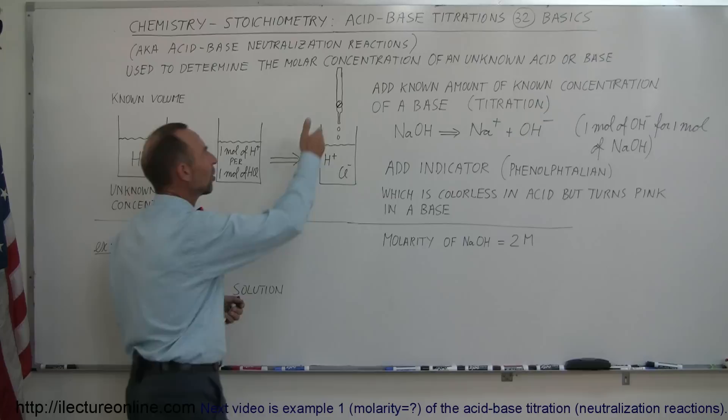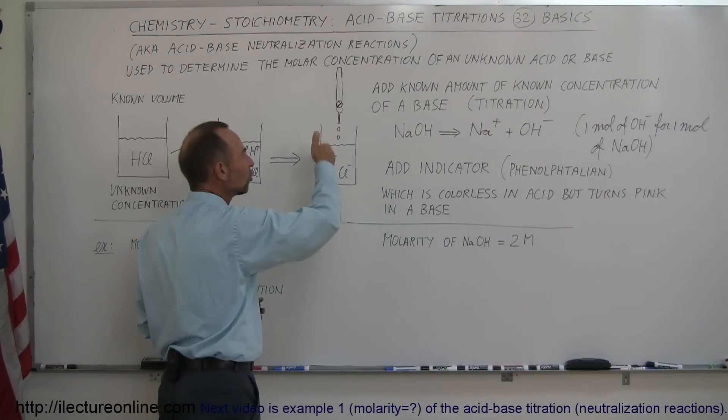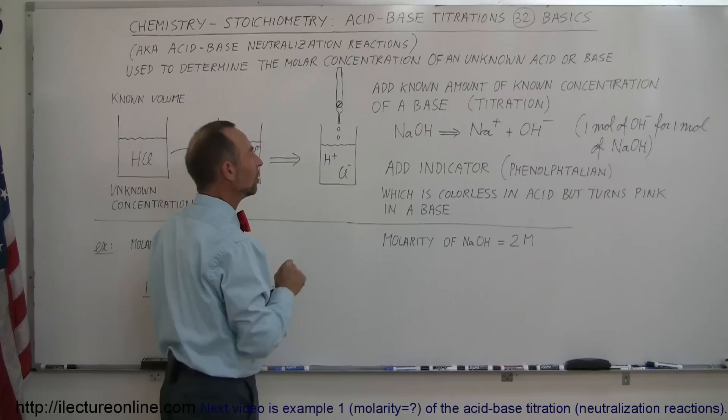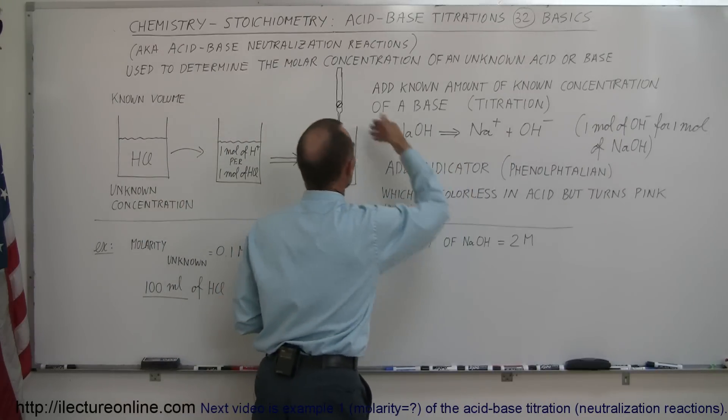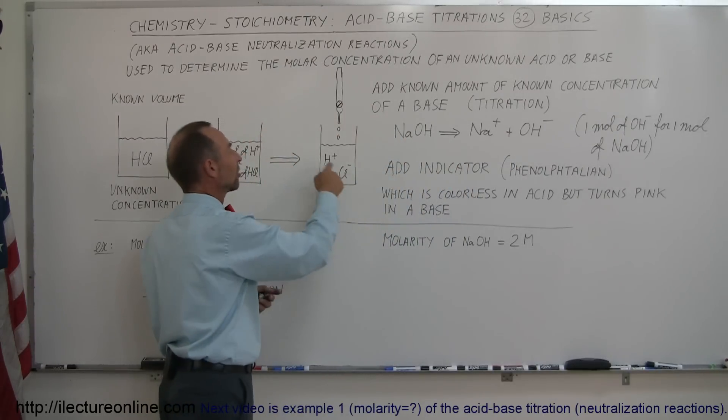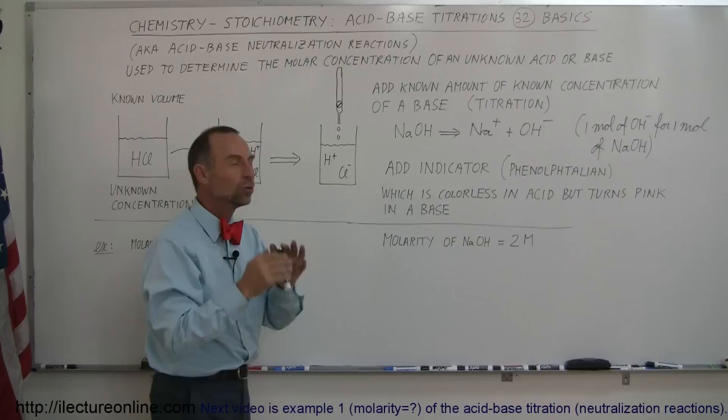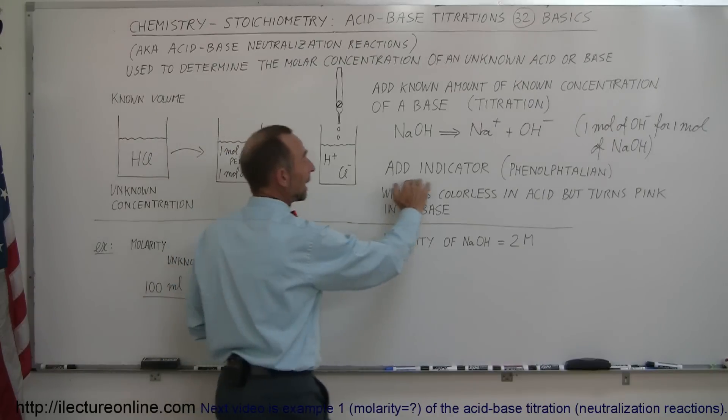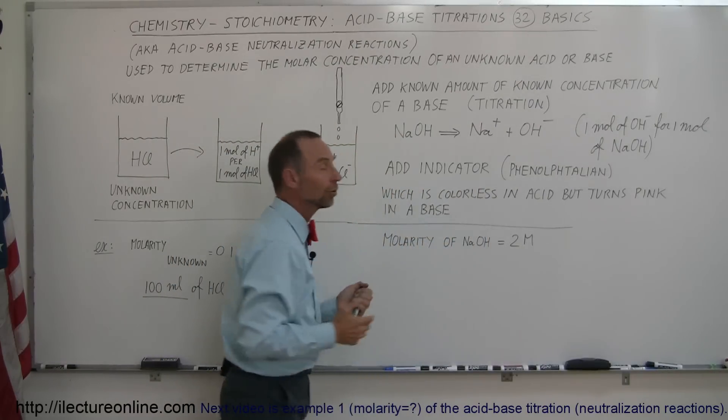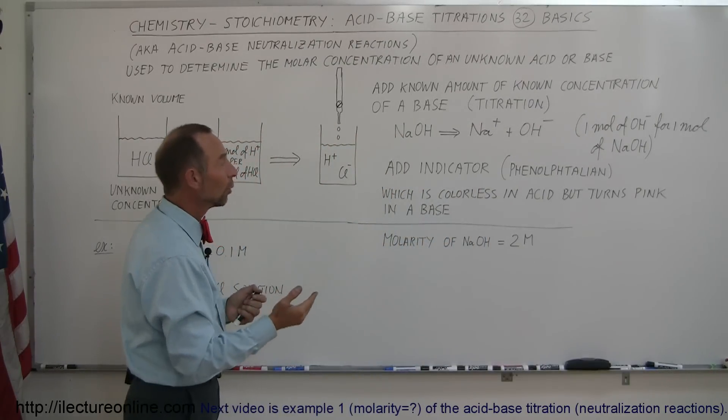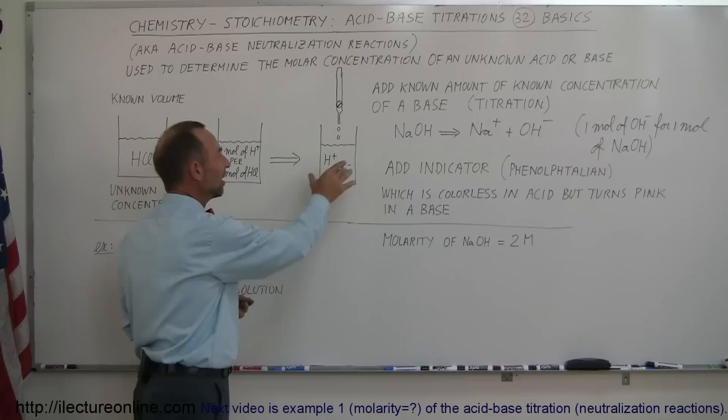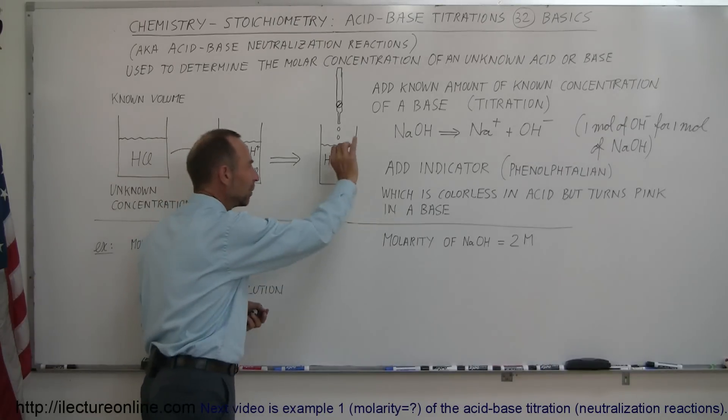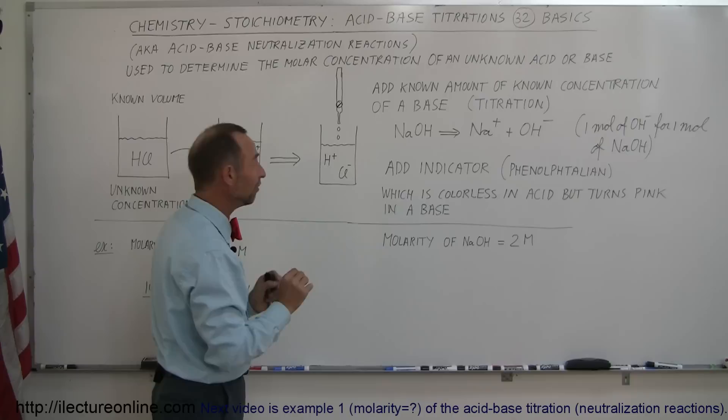What we can do is start adding a base to it slowly. As we add a base to the original solution, some of the hydroxide ions that we introduce will be canceling out the hydrogen ions and neutralizing the solution. If we put in an indicator, phenolphthalein is one of those indicators, which is colorless when it's acidic and becomes pink when it turns basic.